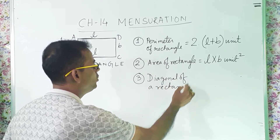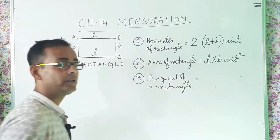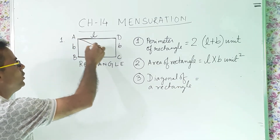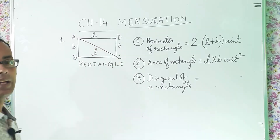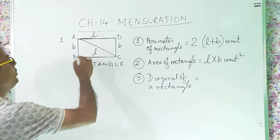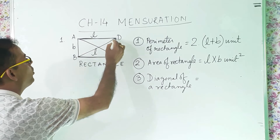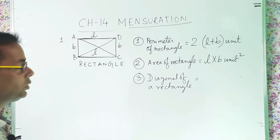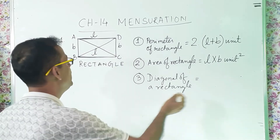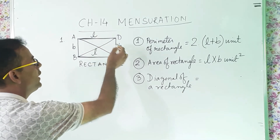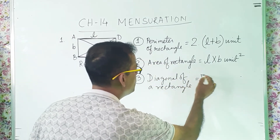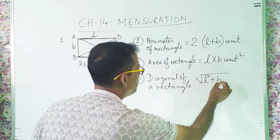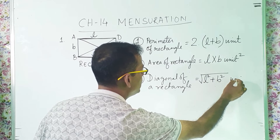The diagonal of a rectangle goes from point A to point C. The formula for the diagonal is root over (length squared plus breadth squared), in units.